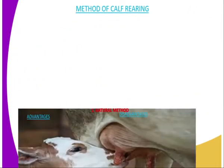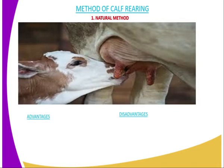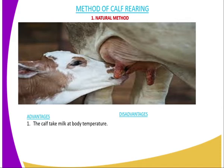In the natural method of rearing, the calf is allowed to suck directly from the mother. This is what we refer to as the natural rearing method. The advantages of natural rearing method: the first one, the calf takes milk at body temperature of the mother, and therefore they cannot be affected because there is no contamination. Number two, milk is free from contamination.